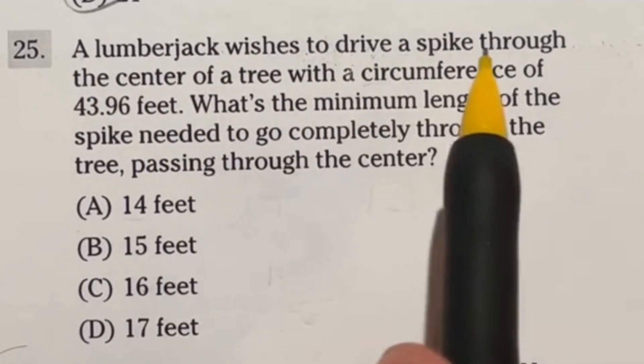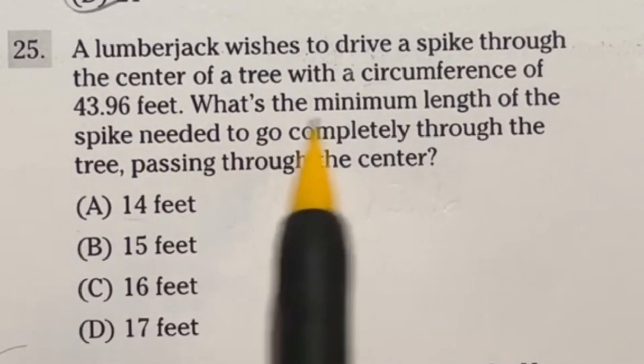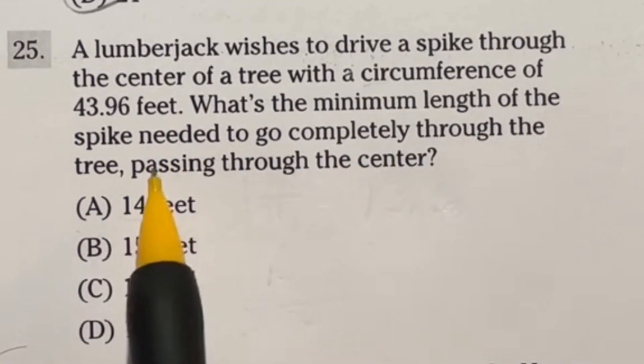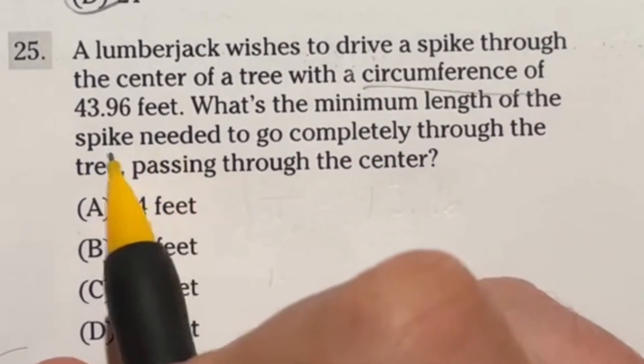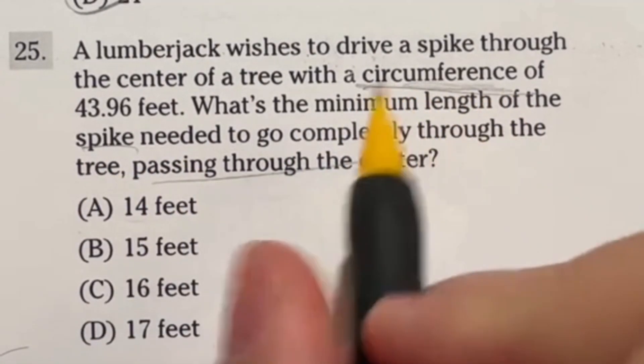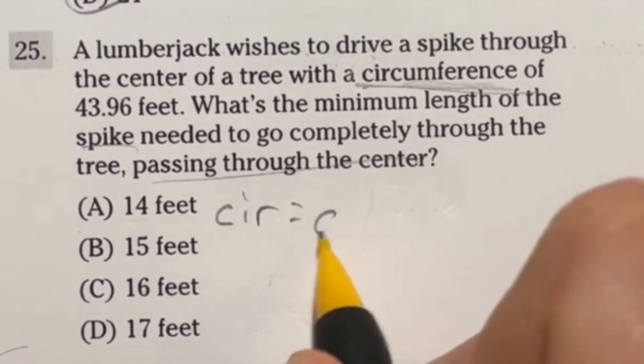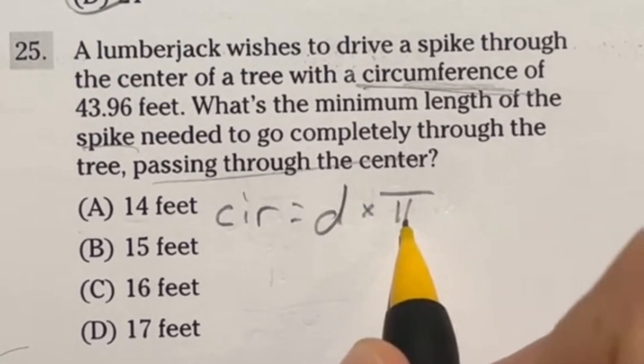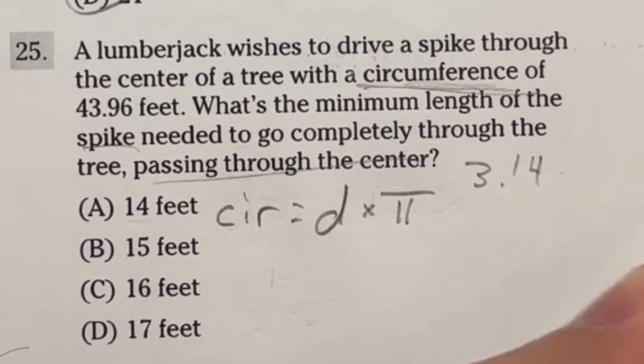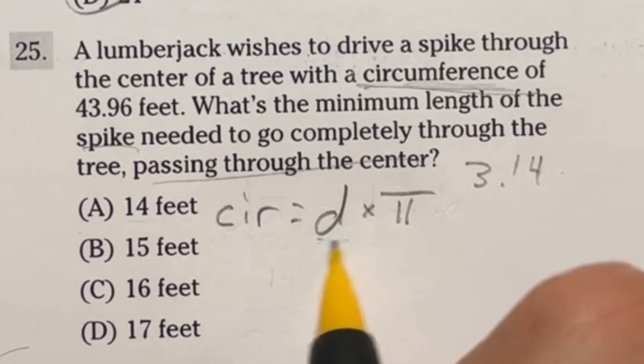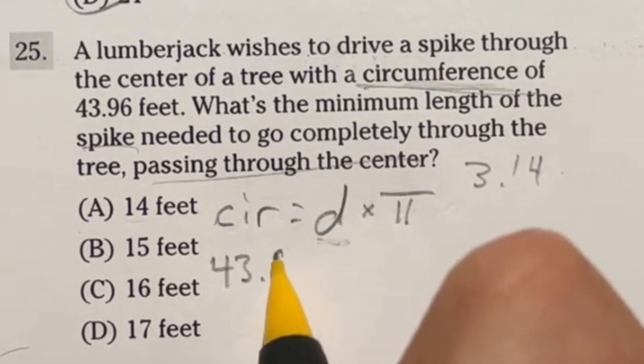Number 25 on the episode says a lumberjack wishes to drive a spike through the center of a tree with a circumference of 43.96 feet. What's the minimum length of the spike needed to go completely through the tree passing through the center? So in this case, we're talking about circumference and then we're trying to get a spike that's going through the center. Well, the important thing to know here is that circumference is going to be equal to the diameter of that tree times pi.